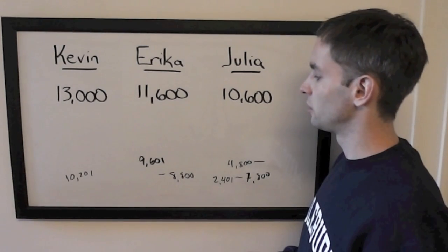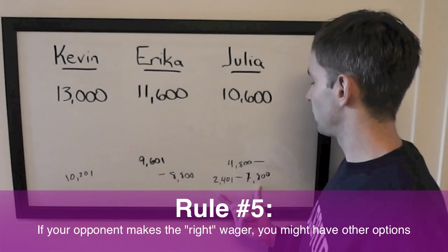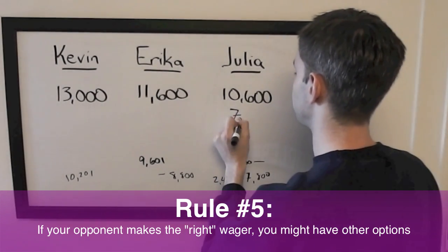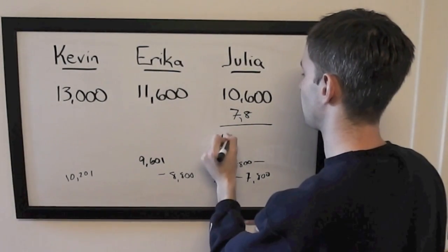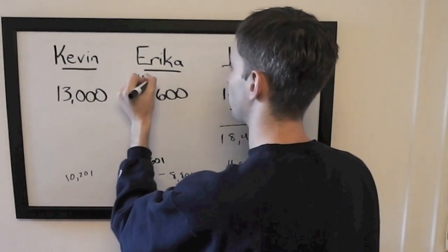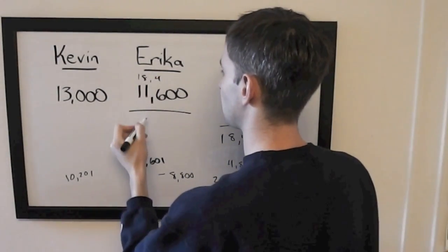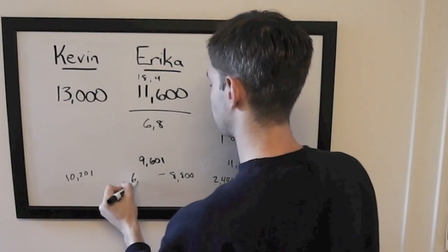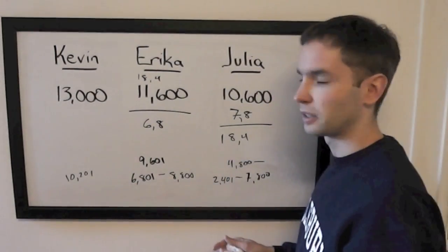One other thing that Erica could do is if she thinks that Julia is going to make this rational wager, as with Monday's game, she can try to lock out Julia. In that case, Julia would have $18,400, so Erica would need to wager $6,801. So that's certainly an alternative.